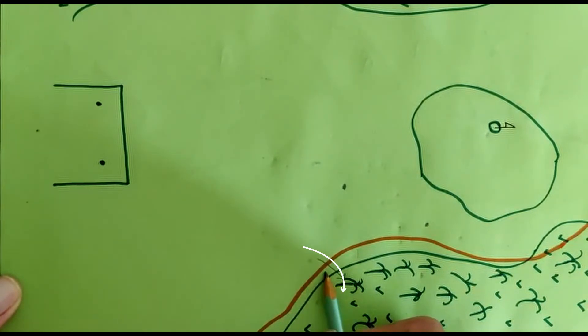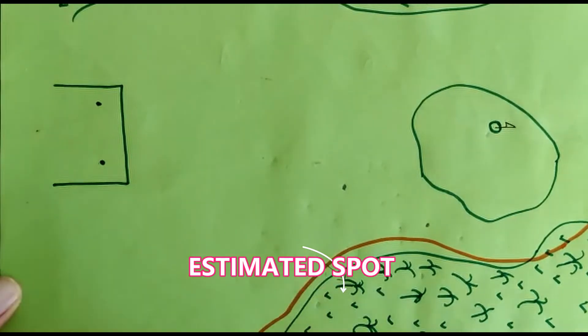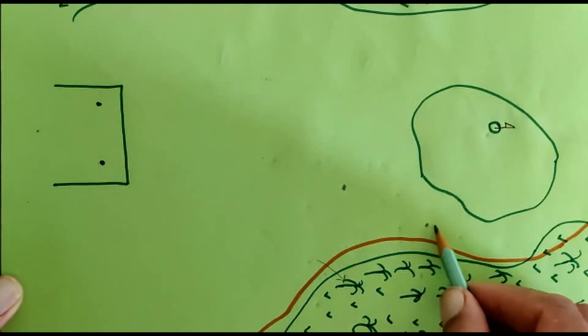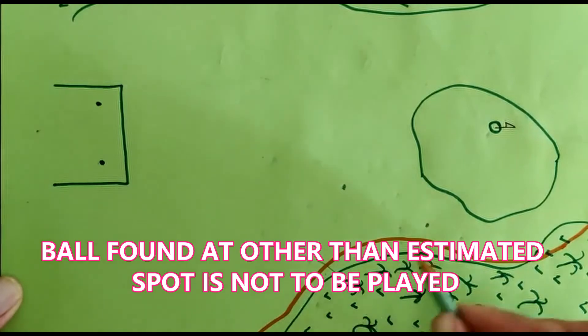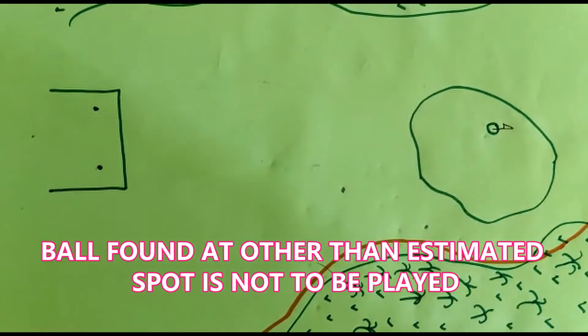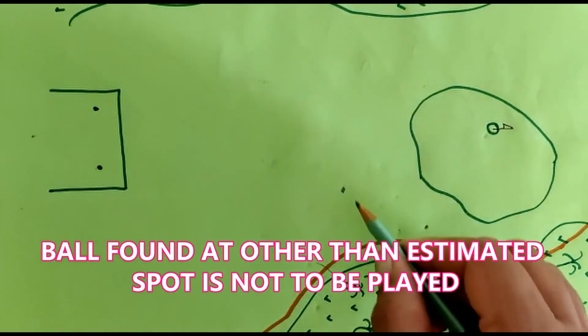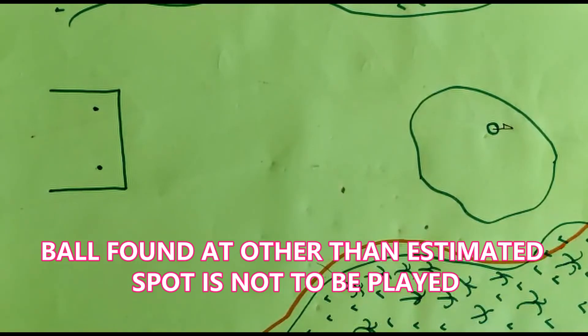The player estimated that his original ball had gone out of bound from this spot. Therefore, this becomes the estimated spot where the ball would be. If a ball is found at a place other than the estimated place, then that ball is not to be played and the shot with the provisional ball counts. That's all for now.